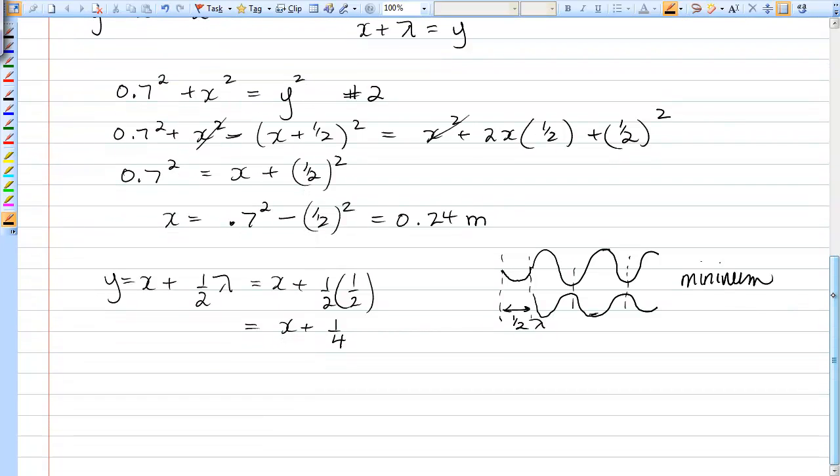Put that into our geometry and we'll solve for X. So for the minimum, you have 0.7 squared plus X squared is equal to X plus 1 quarter squared.